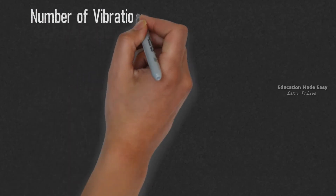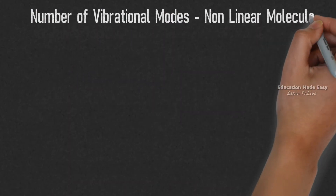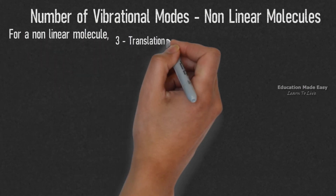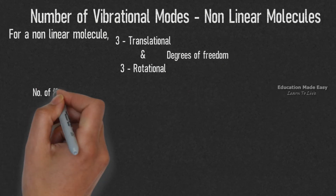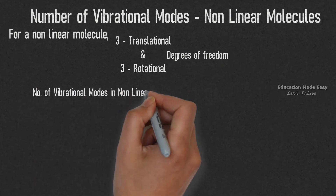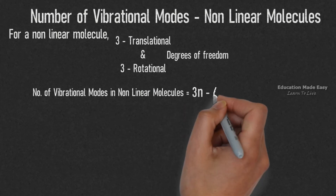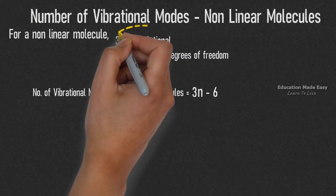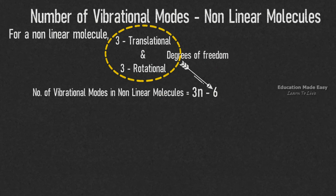Now let us learn about the number of vibrational modes in nonlinear molecules. For a nonlinear molecule, there are three translational and three rotational degrees of freedom. Therefore, the number of vibrational modes in a nonlinear molecule is given by 3N − 6, where N represents the number of atoms in the molecule, and the sum of three translational and three rotational degrees of freedom represents 6.